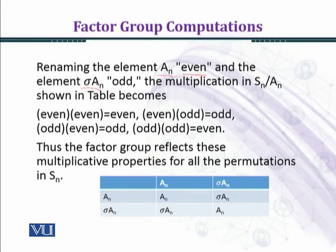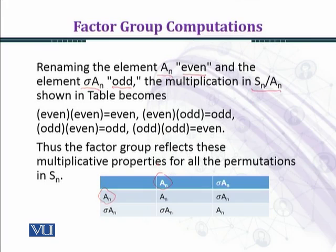Renaming the element A_n as 'even' and the element sigma·A_n as 'odd', the multiplication in S_n over A_n is shown in the table below. A_n is the set of all even permutations: even times even gives even, even times odd gives odd, odd times even gives odd, and odd times odd gives even.